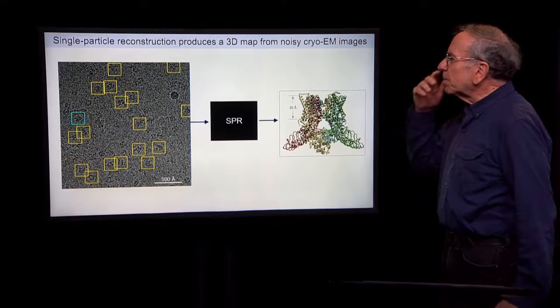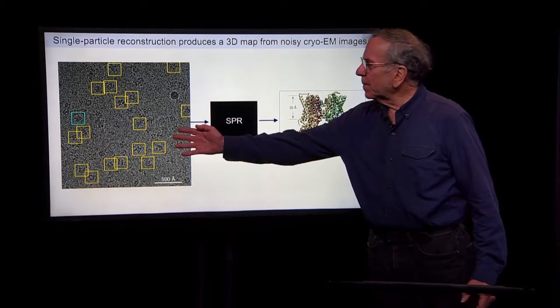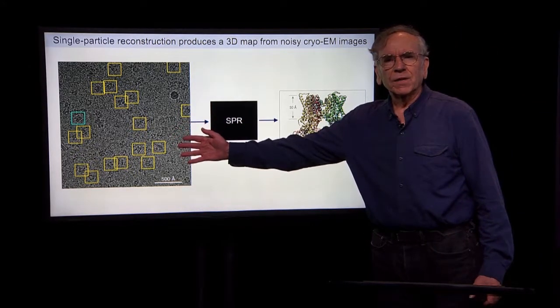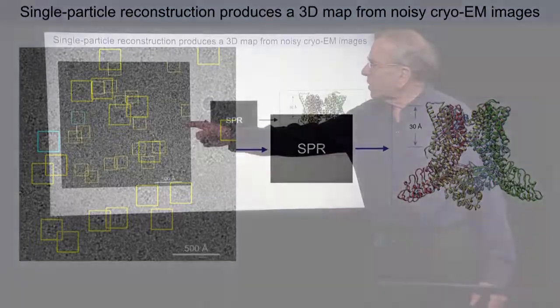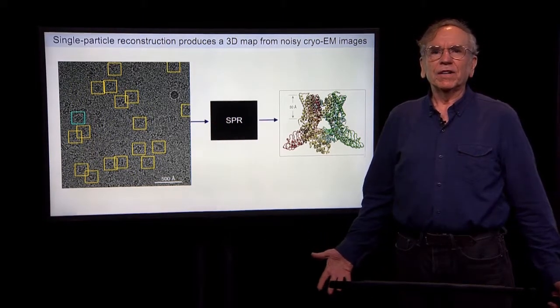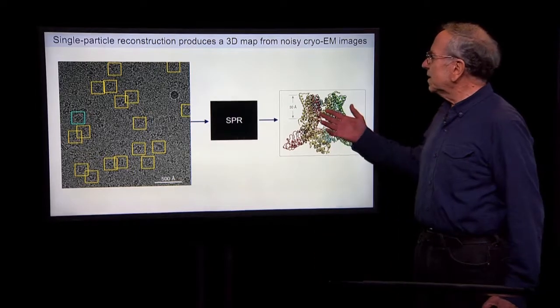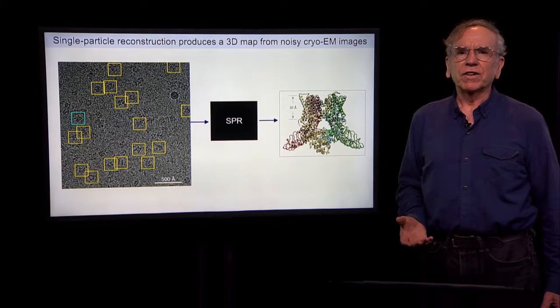As you know, in single-particle cryo-EM, you start with an electron microscope image. It looks really quite terrible with individual particles. The particles are your macromolecules of interest, and a large number of these images are fed into this black box called single-particle reconstruction, and out comes a density map from which you can fit an atomic structure.